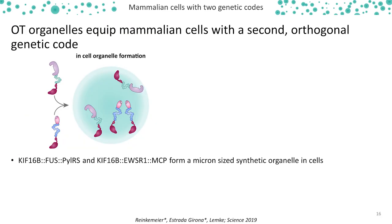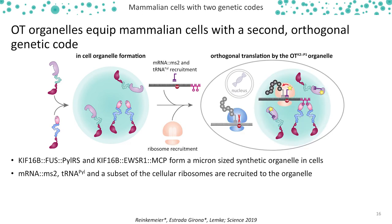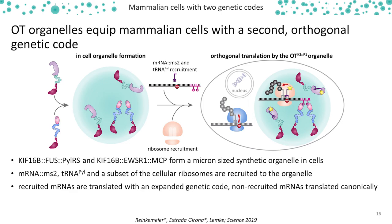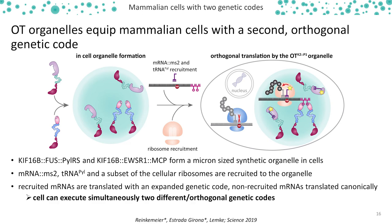In summary, we have shown that we can create synthetic organelles by co-expressing kinesin fused to a phase separation domain together with the tRNA synthetase and the MCP protein. These form a micron-sized organelle within the cell that recruits mRNA-MS2, the pyrolysine tRNA, and a subset of the cellular ribosomes. Only mRNAs translated within this organelle get modified with the non-canonical amino acid, while mRNAs translated in the cytoplasm are translated canonically and terminated when they encounter the stop codon. With this, we created the first cell that can simultaneously execute two different genetic codes depending on where the protein is translated.